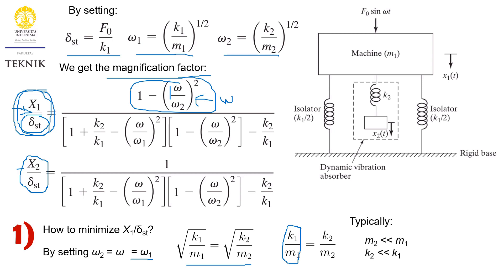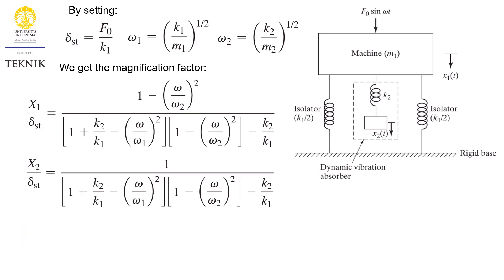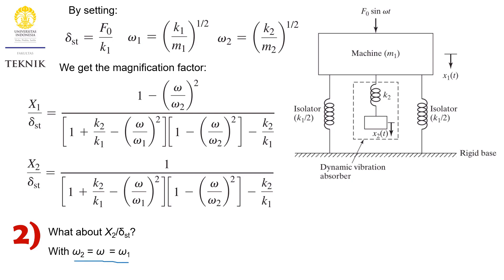Typically, we select the value of mass 2 to be much less than mass 1, and k2 should be much less than k1. The second thing we need to understand is the value of x2 — we need to ask about x2 under the same condition where all frequencies are equal.